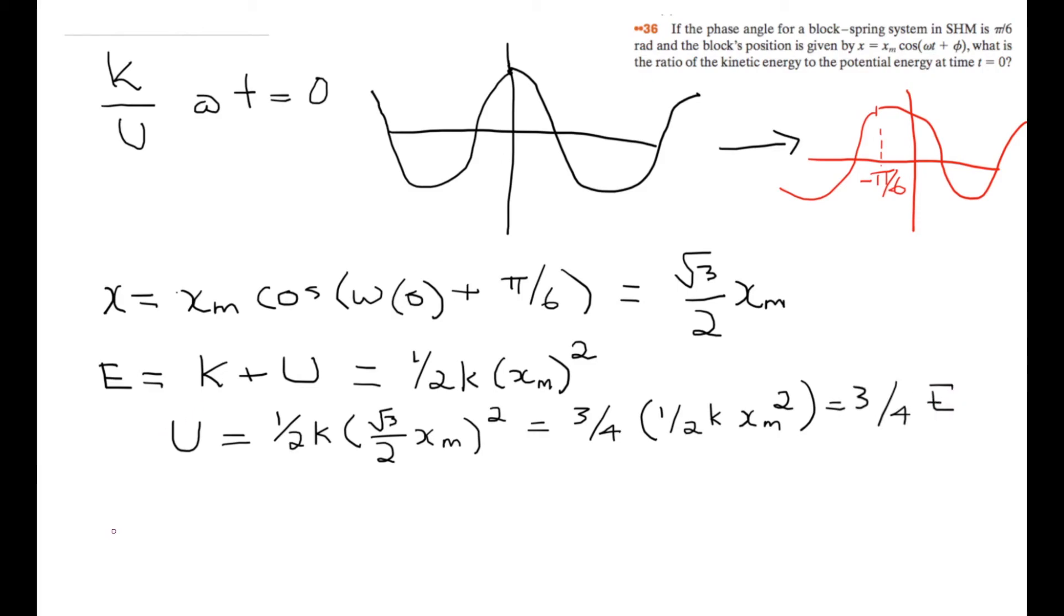Since mechanical energy is always constant, we have E equals K plus the potential energy, which can also be written as ¾E. Solving for this, we get the kinetic energy is equal to ¼ of the mechanical energy.